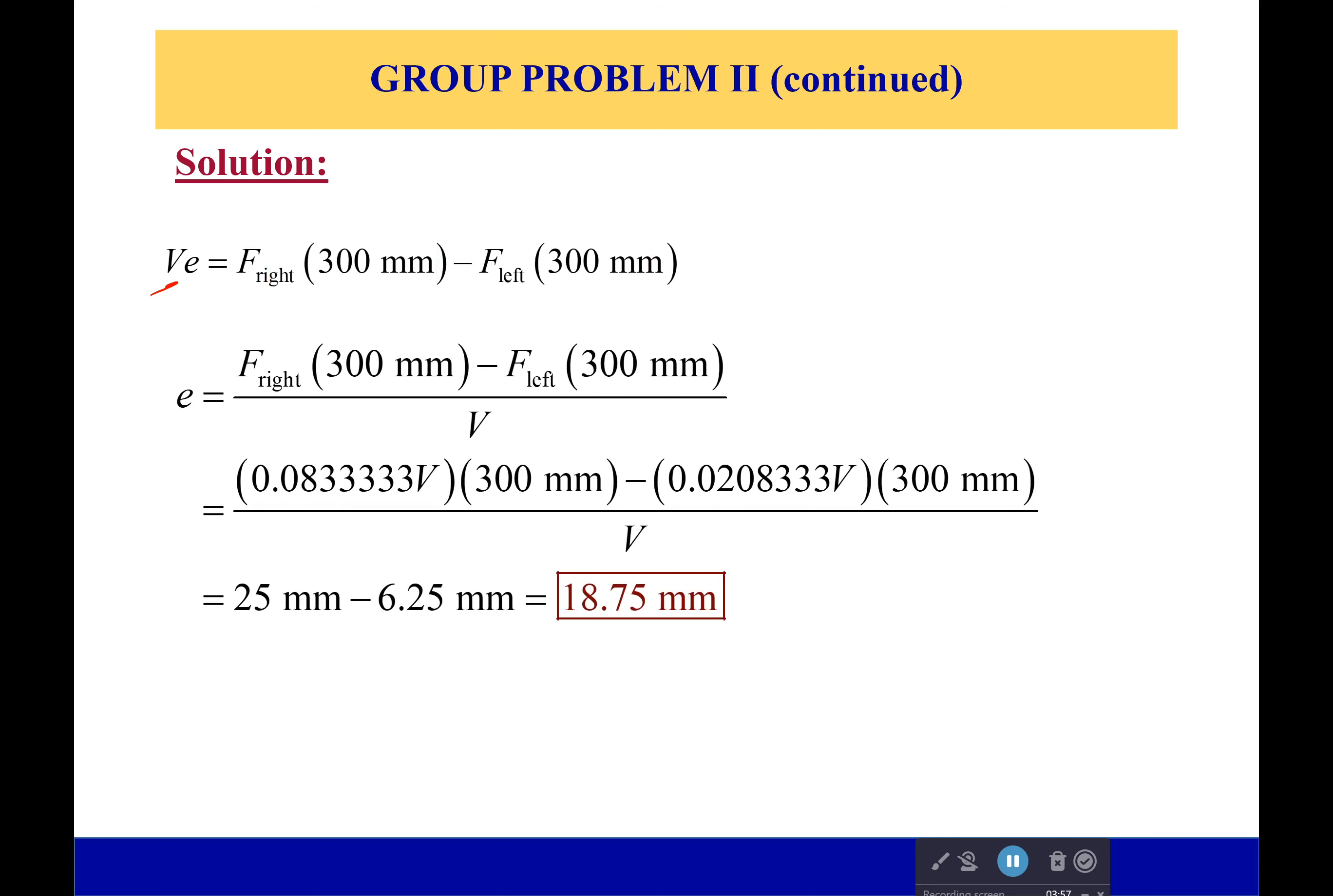So we have 0.0833 for the force on the right, 0.020833 for the force on the left. We multiply it out. Our v's cancel. And we're left with a shear center that is 18.75 millimeters from the web. 18.75 millimeters from the web to keep it nice and stable.